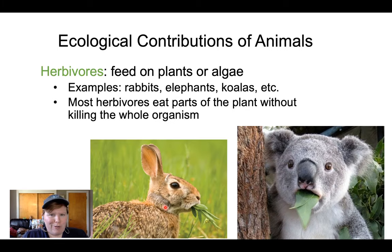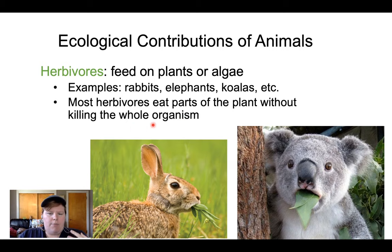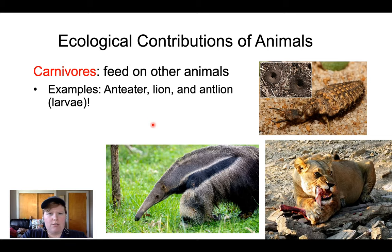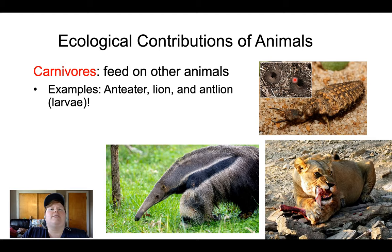Herbivores can contribute by pruning plants back and spreading seeds. Carnivores feed on other animals — everything from this anteater to a lioness. Even the larvae of insects called antlions are good carnivores: they make little burrows and jump out to grab their prey. And then omnivores — 'omni' meaning all — can eat lots of different things: a combination of plants, animals, fungi, and more. Raccoons are very good omnivores. Humans are good omnivores too — we may choose to eat different things, but we're capable of gaining energy from lots of different food sources.